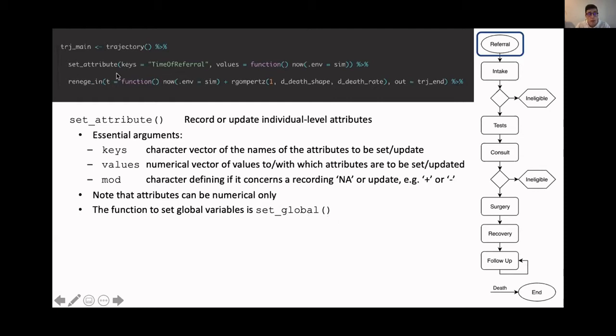We have stored the set attribute, or the time of referral. But in doing so, we use the now function. And the now function is a function to obtain the current simulation time of the simulation that's defined by the environment. In this case, as we'll see later, our simulation is called sim.